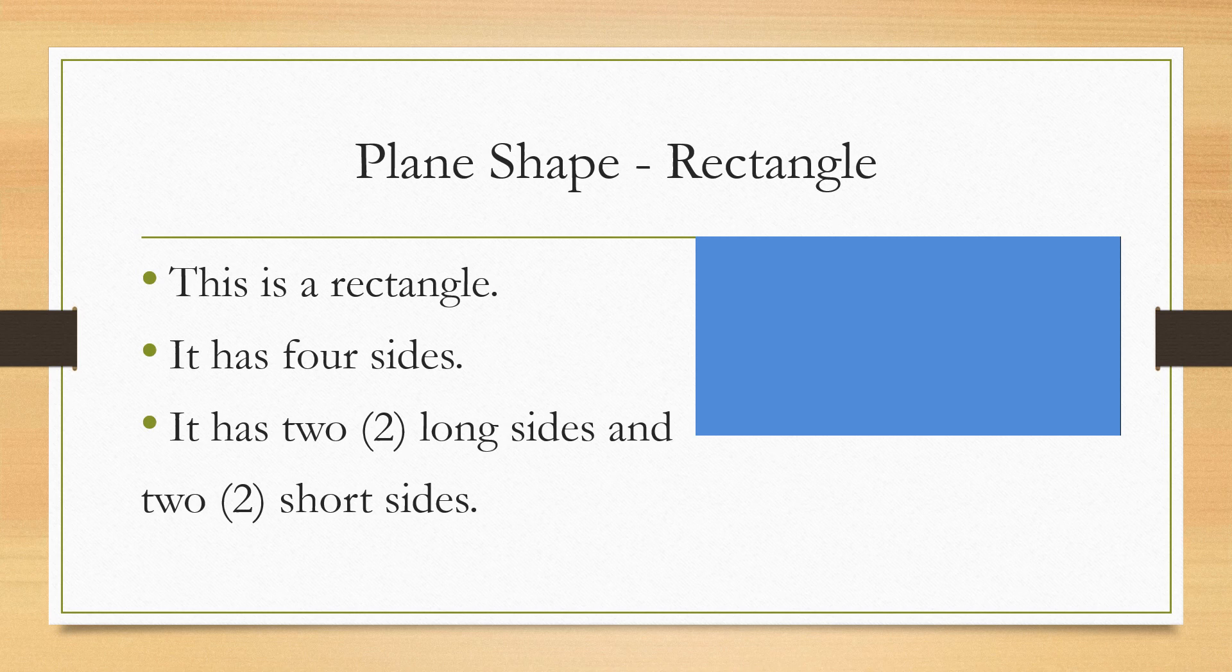A plane shape rectangle. This is a rectangle. So the picture you are seeing on your right hand side, that blue picture is the shape of a rectangle. It has 4 sides. Count with me now. 1, 2, 3, 4. So it has 4 sides.